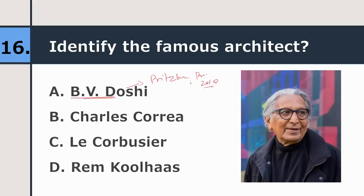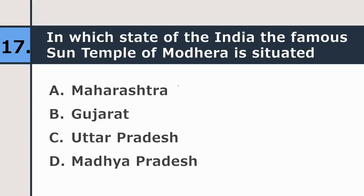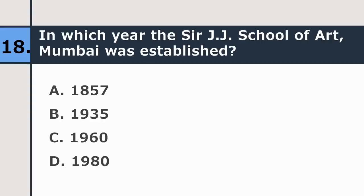Seventeenth question: in which state of India is the famous Sun Temple of Modhera situated — Maharashtra, Gujarat, Uttar Pradesh, or Madhya Pradesh? The correct answer is Gujarat. Eighteenth question: in which year was Sir J.J. School of Art, Mumbai established — 1857, 1935, 1960, or 1980? The correct answer is 1857.